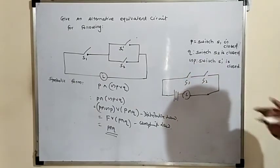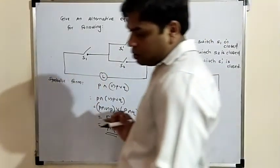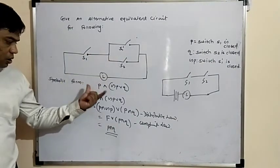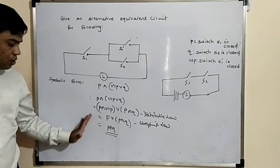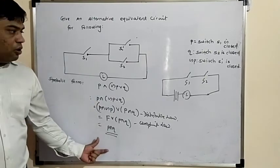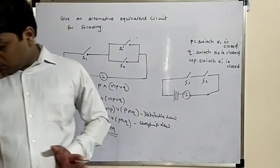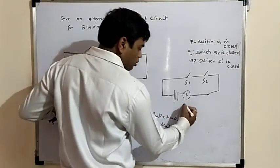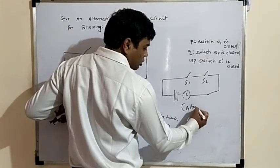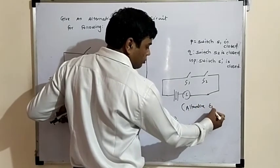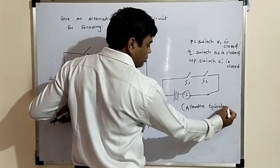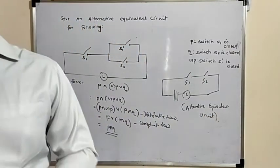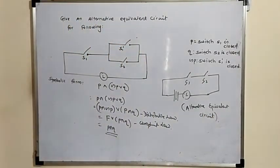This is the simplest form of circuit: S1 and S2 in series. From the original circuit, after applying the laws, we get this simplified form. We draw the simplest circuit — this is the alternative equivalent circuit. In this way we can draw alternative circuits.